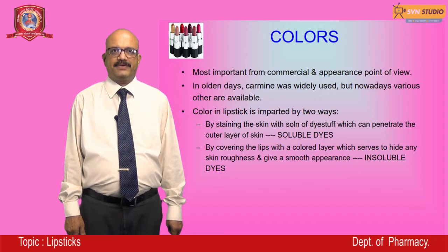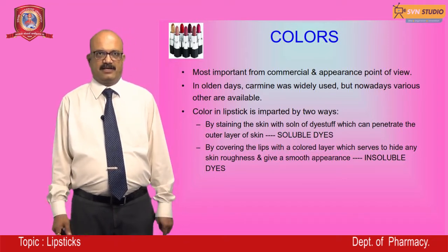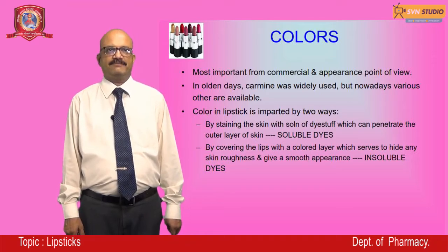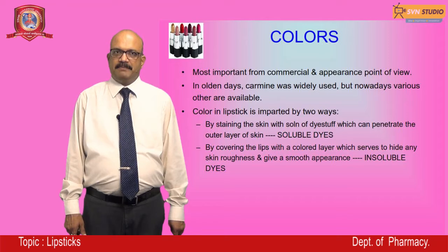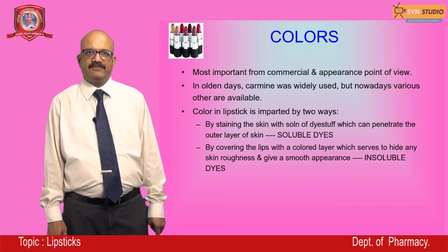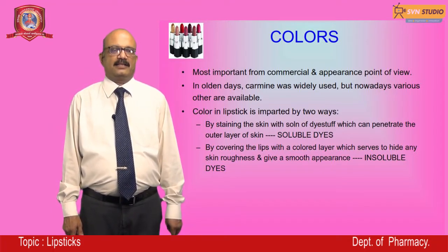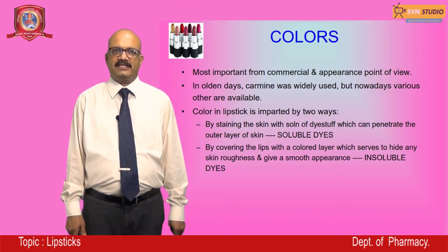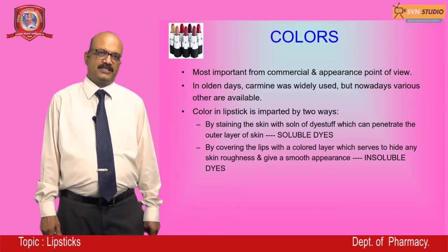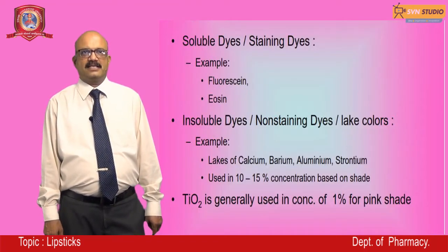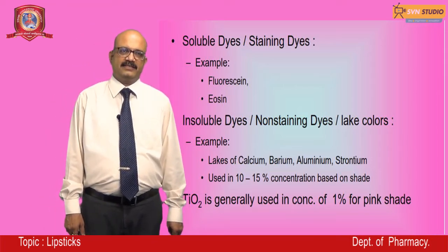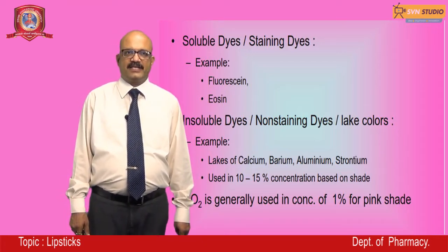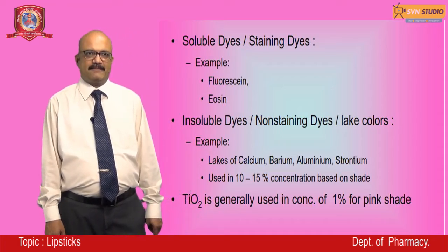Colors are used to give various shades to the product — this is the most important component from a commercial and appearance standpoint. In earlier days carmine was widely used, but today various other colors are available. Color in lipstick is imparted in two ways: by staining the skin with a solution of dyestuff that penetrates the outer layer — these are soluble dyes — or by covering the lips with a colored layer using insoluble dyes. Examples of soluble dyes are fluorescent dyes and eosin dye. For insoluble dyes, examples include calcium, barium, aluminium, and strontium lakes, used at 10 to 15 percent concentration. Titanium dioxide is used at about 1 percent concentration for obtaining a pink shade.